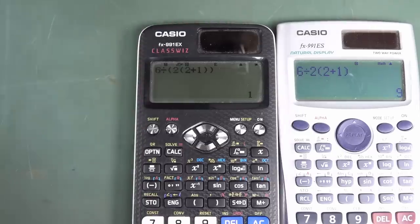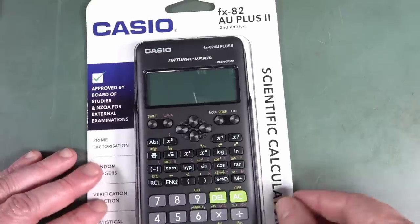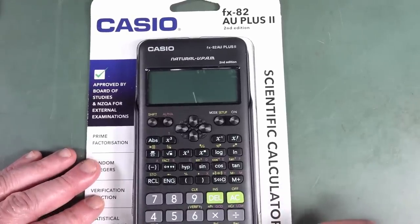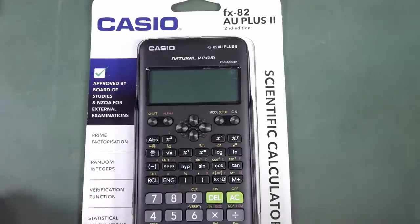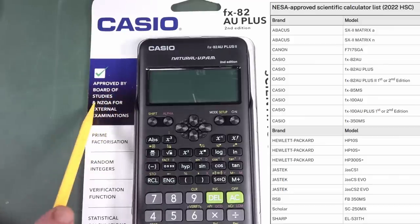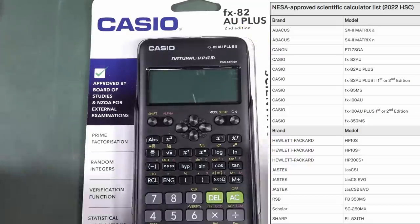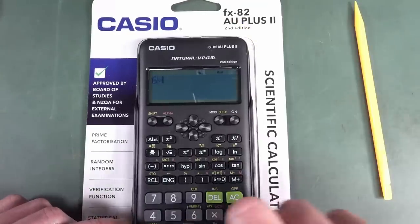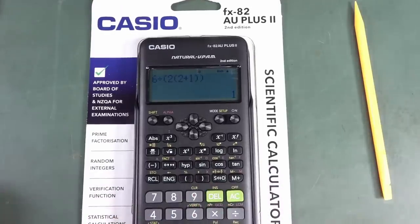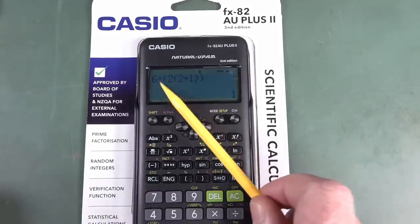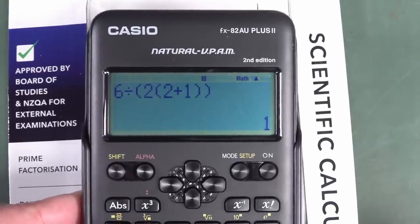And this is why calculators are certified for exams. You'll have various educational bodies actually verify calculators and certify them for a particular market. So let's take this one. We've got a Casio FX82 AU Plus 2 2nd Edition. Ugh, goodness, Casio. Anyway, this one is approved by the Board of Studies for the New Zealand QA for external examinations. I assume this is Australian as well. Because this is the AU model. This is the Australian model. So let's see what this puppy does. 6 divided by 2, parentheses, 2 plus 1. And it gives us the result. Sure enough, 1. And it added the extra parentheses in there.